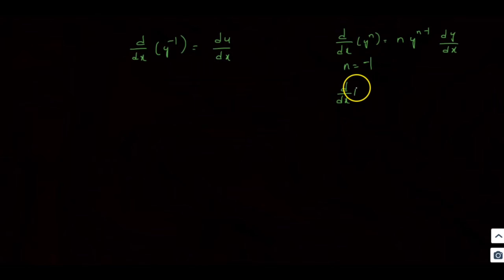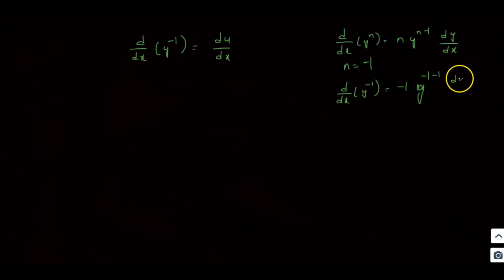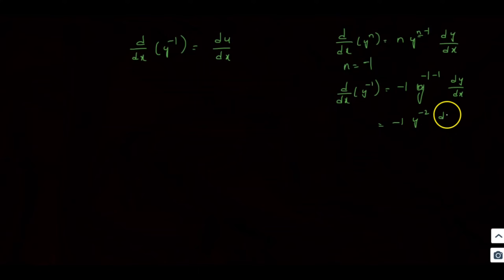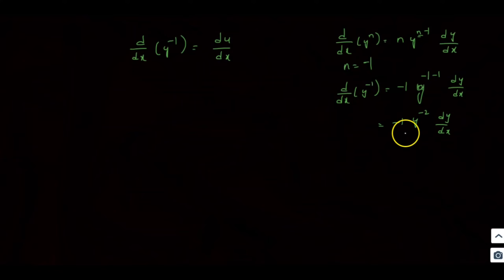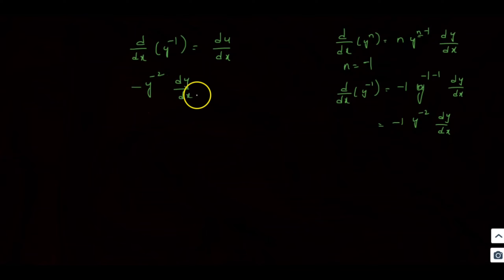So d/dx of y^(−1) equals −1 · y^(−2) · dy/dx. Therefore, minus y^(−2) · dy/dx equals du/dx. This is the key derivative relation used for the substitution.